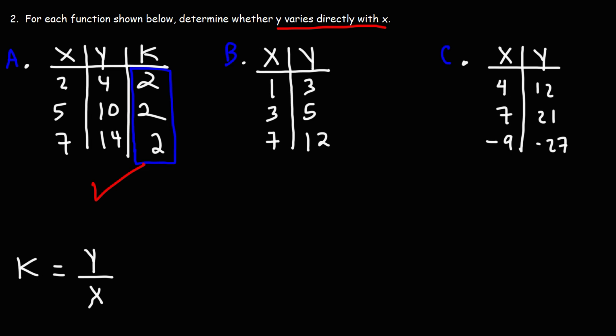Now what about the second table associated with B? Let's calculate K for each pair of X and Y values. 3 divided by 1 gives us 3. 5 divided by 3, that's not 3. That's like 1.67 repeating or 1.6 repeating. 12 divided by 7, that's not going to be 3 either. 12 divided by 7 is approximately 1.71. So looking at the values of K, they're not the same. So we could say Y does not vary directly with X.